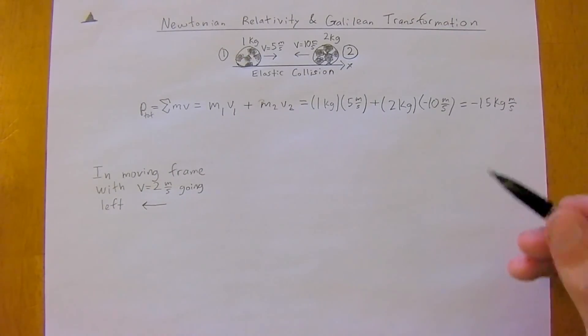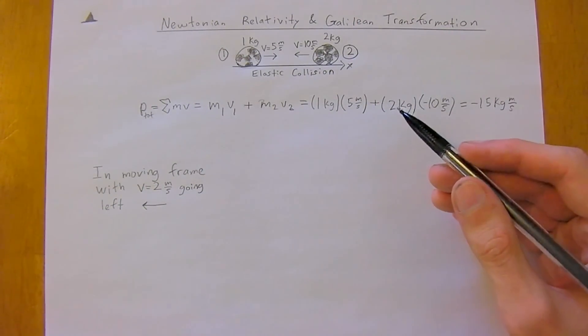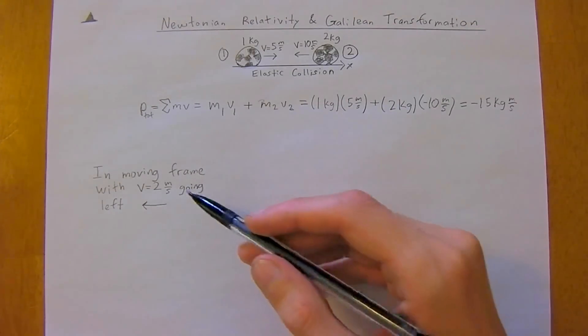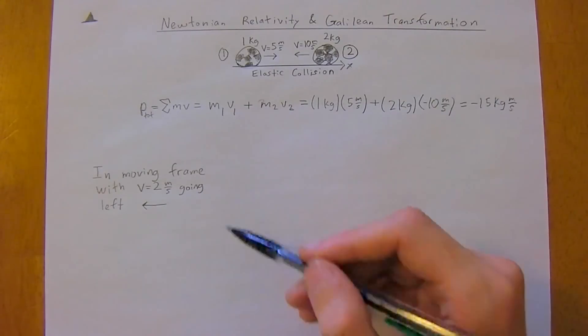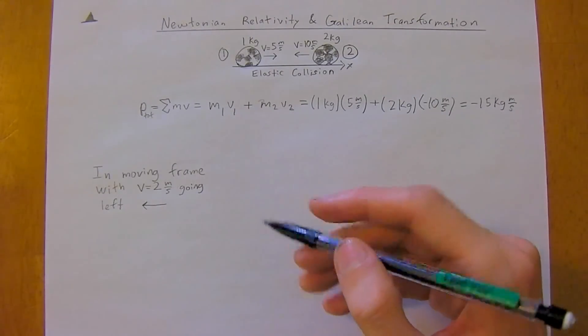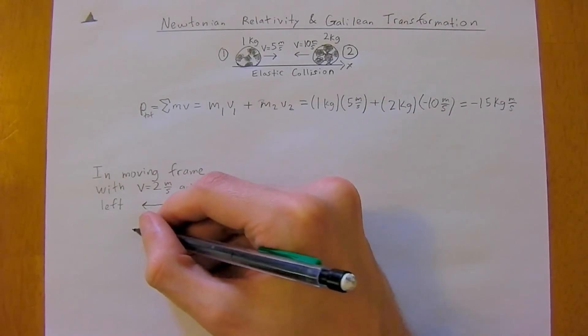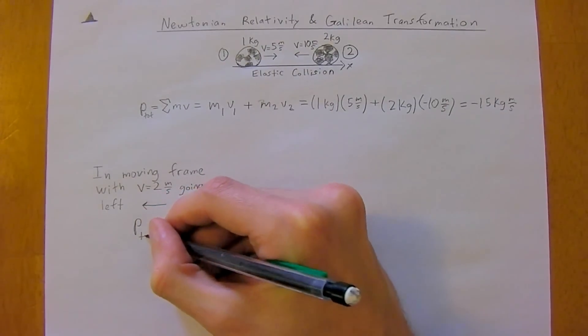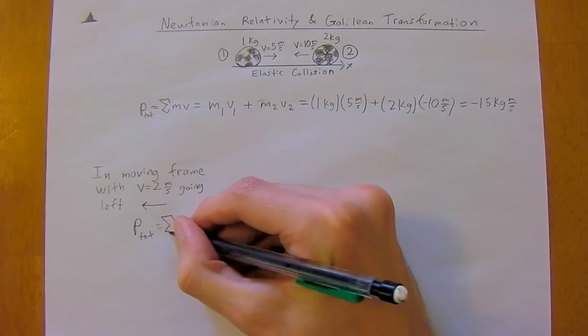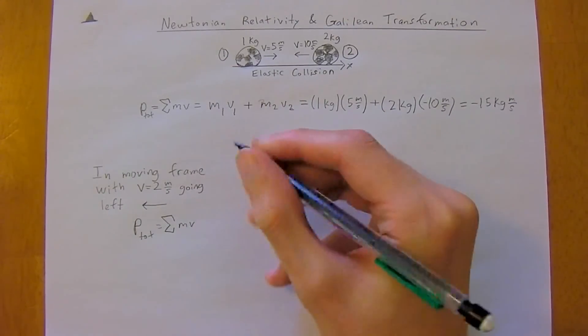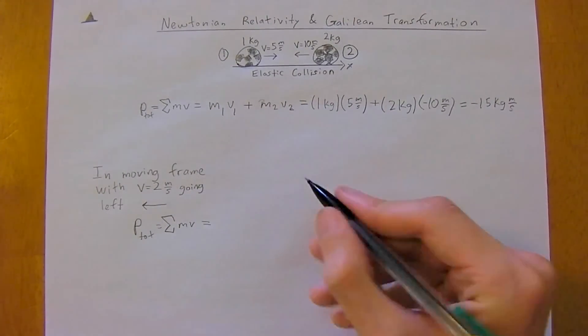So now you're asked to determine the momentum, except we're going to move to this frame of reference here. So we're now moving left with a velocity of two meters per second. And again, it's a pretty straightforward calculation. So just the sum of mv, mass times velocity.